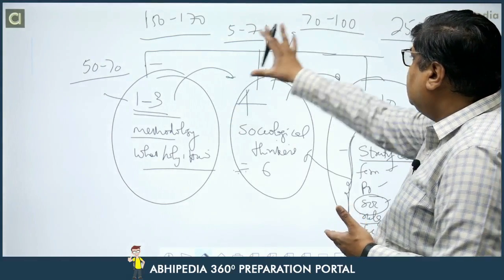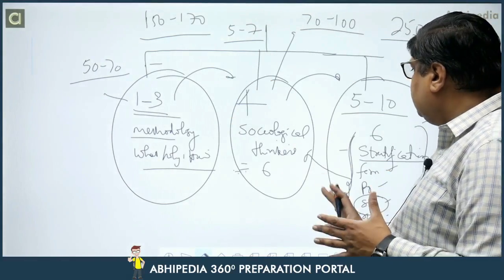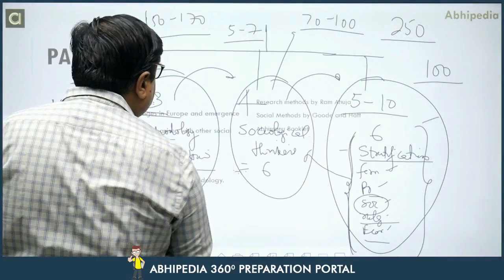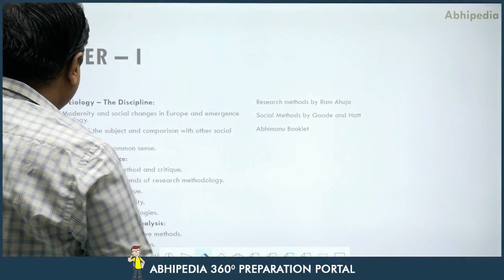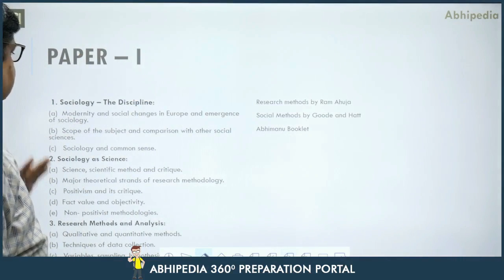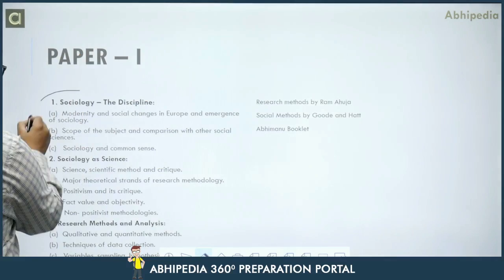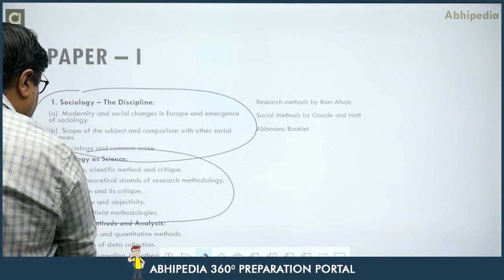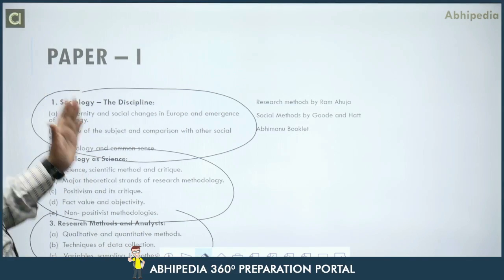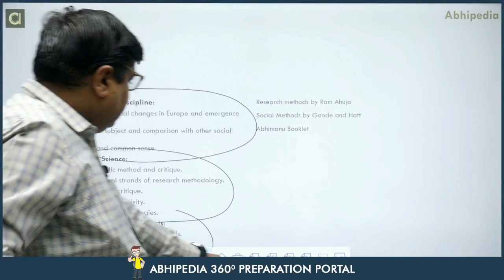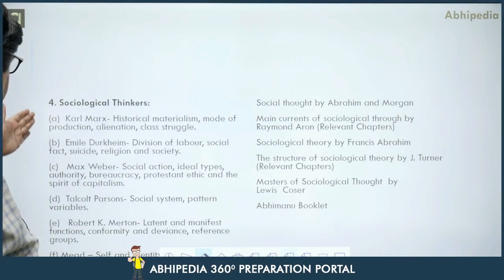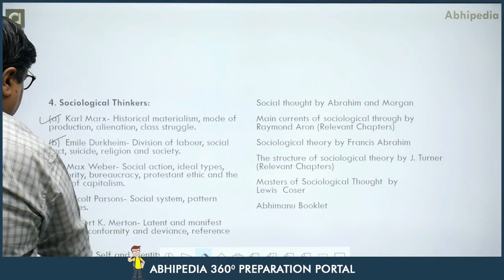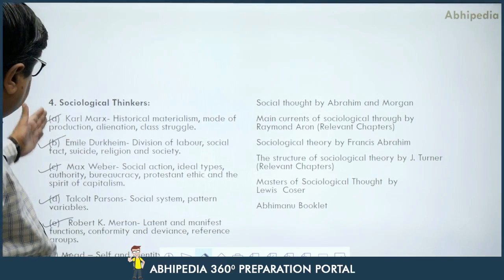Let me now go into the detail of paper 1. The first three chapters are: sociology as a discipline, sociology as a science, and research methods and analysis. Second is the thinkers: Marx, Durkheim, Weber, Parsons, Merton, and Mead — these are your six thinkers.